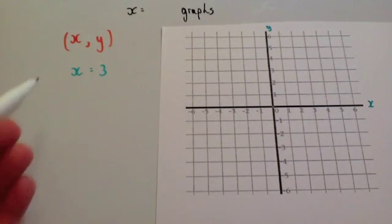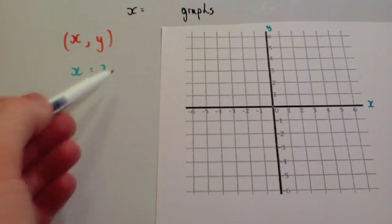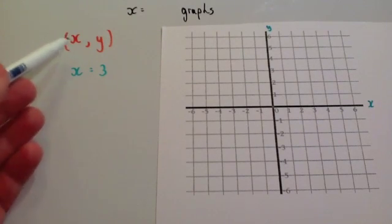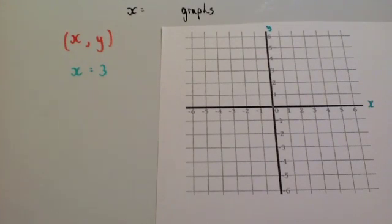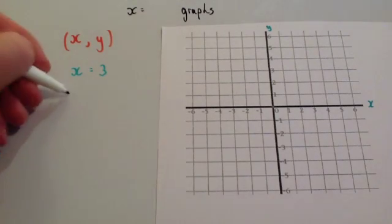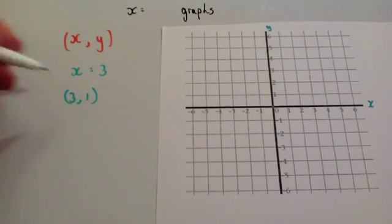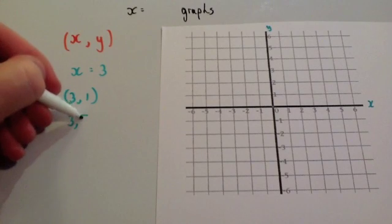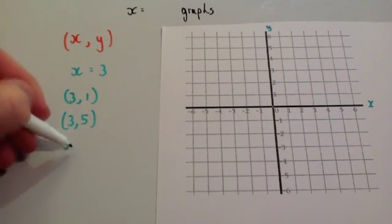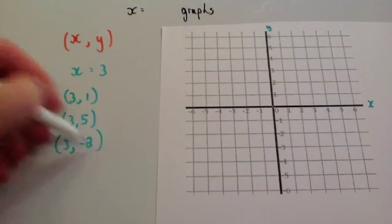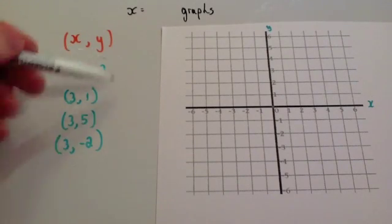If we were to draw the graph x equals 3, that's like a rule that's saying that the x coordinate, the x part of the coordinate, has to be equal to 3. So an example could be 3, 1. Another one could be 3, 5. Another one could be 3, minus 2. So they're all coordinates that follow this rule, x equals 3.